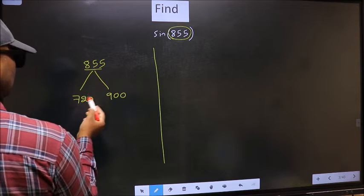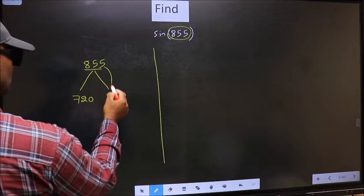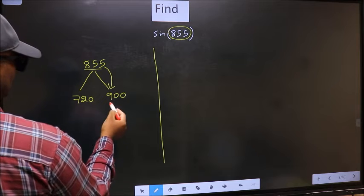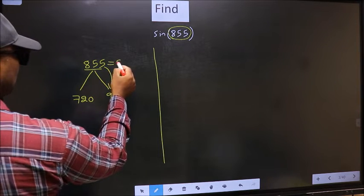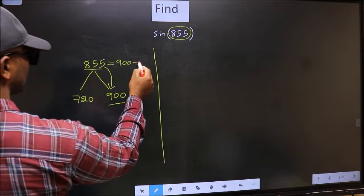Now, 855 is close to which number? This is close to 900. So, 855 now should be written as 900 minus 45.